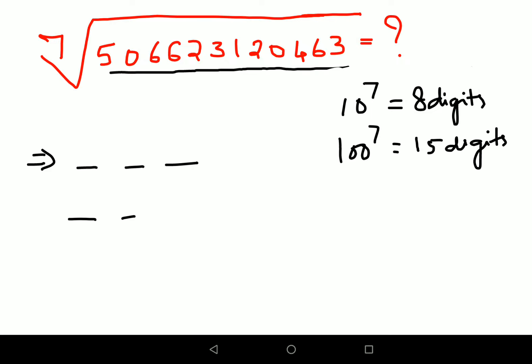So obviously, if this number of digits over here is more than 15, then we can say it is a 3 digit number. If it is less than 15, then we can say it is a 2 digit number. So let's count: 1, 2, 3, 4, 5, 6, 7, 8, 9, 10, 11, 12. So we are having actually 12 digits. So obviously, we can say that it is not a 3 digit answer, it is a 2 digit answer.